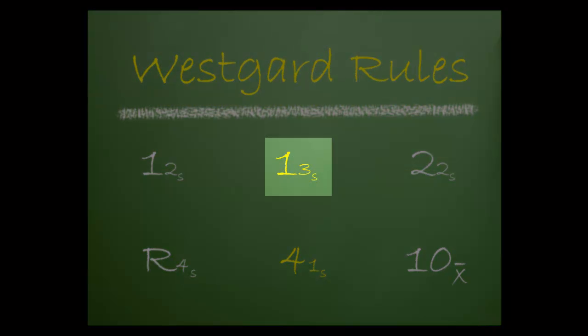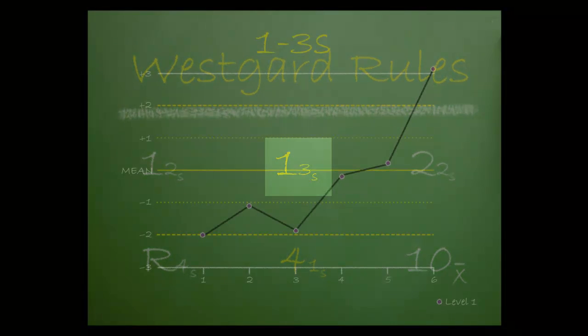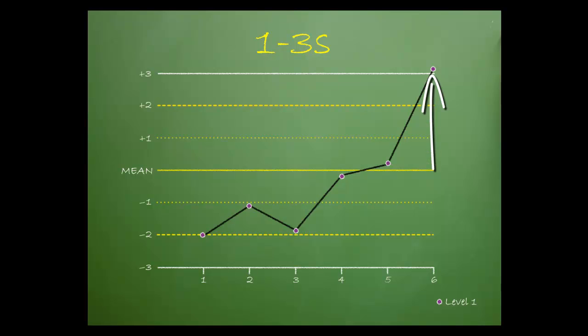WestGuard's next rule is 1-3-S. This rule is violated when a single control value is outside three standard deviations from the mean. Remember that violations can occur on either side of the mean.